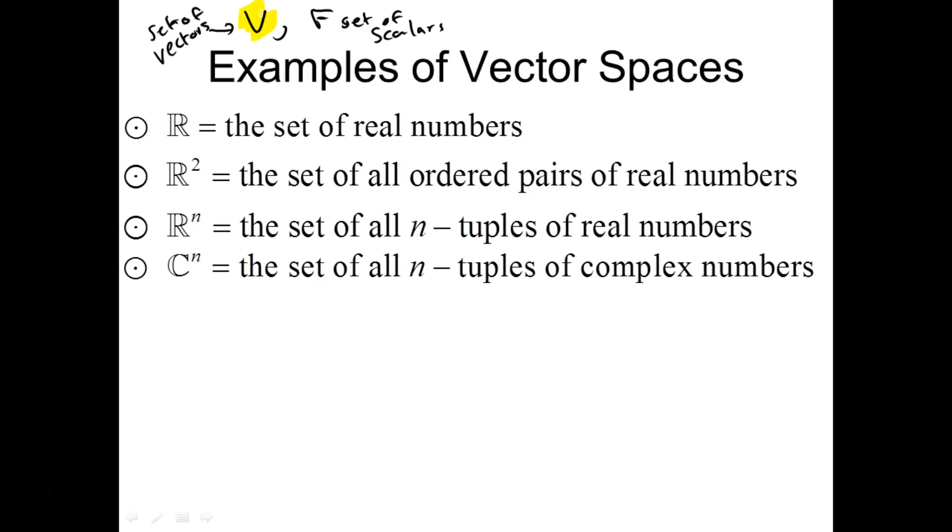No need to be restricted just to real numbers. We can go to complex numbers as well. And everything, as far as the ten axioms, will hold. And so we call that C^n, generically. That's the set of all complex n-tuples. And C, we could take C by itself, or C^2, but we'll just say C^n in general.